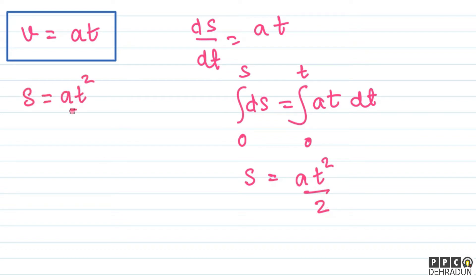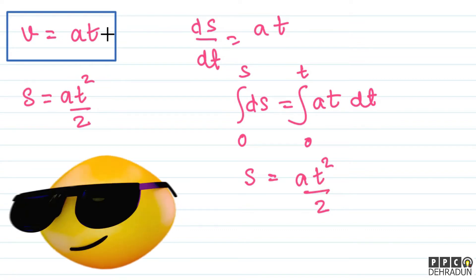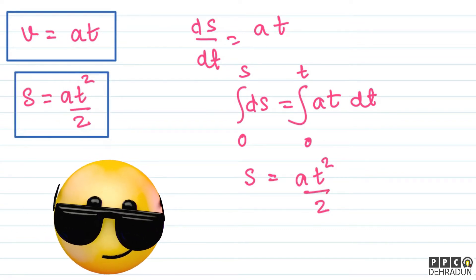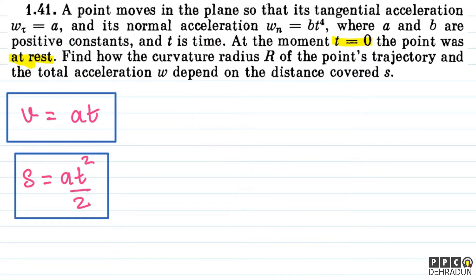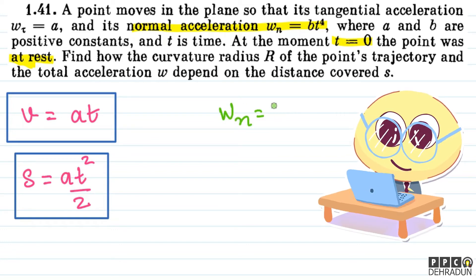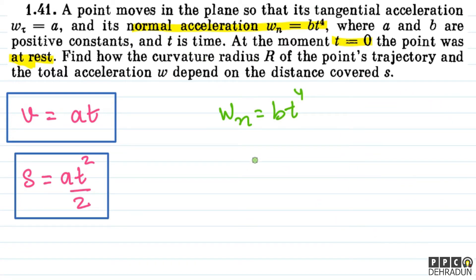s = at²/2. This is our second equation. So far we have only used the tangential acceleration data: w_τ = a, a positive constant. Now we use the next data — the normal acceleration w_n = bt⁴. We can write w_n = v²/R = bt⁴, where R is the curvature radius of the point's trajectory.